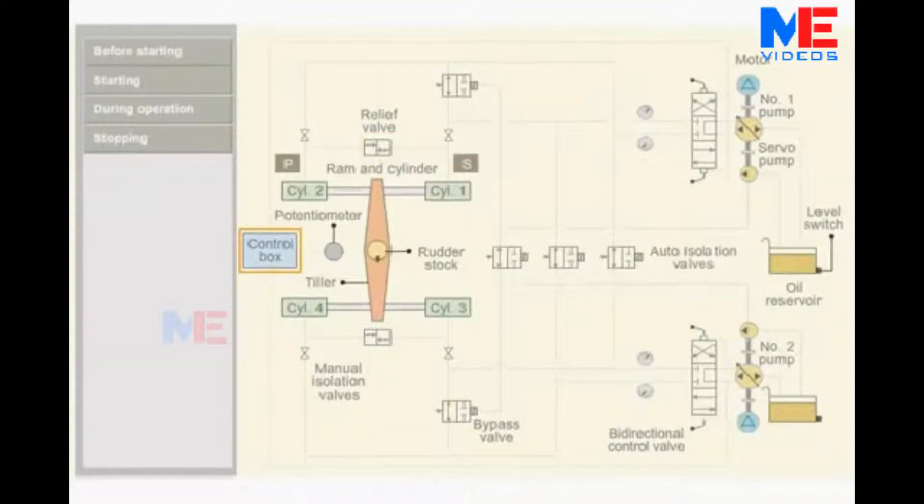The control box receives helm order from bridge and sends electric signals to directional control valve. Pressurized hydraulic oil is supplied to the cylinders. The tiller arm converts the linear motion of the rams into rotary motion of the rudder stock. Potentiometer senses the rudder stock position and sends feedback to control box.